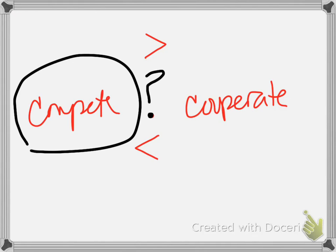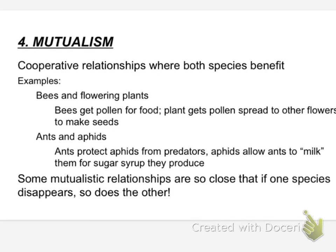On the other side of the coin, we have types of symbiotic relationships based on everybody getting benefits out. Let's start with mutualism — a cooperative relationship where both species get something out of the deal. The common example is bees and flowering plants — really, any pollinator. Did you know there are flowers that smell like rotting meat? The carrion flower attracts flies, which land on it, get covered in pollen, and take it to the next carrion flower.